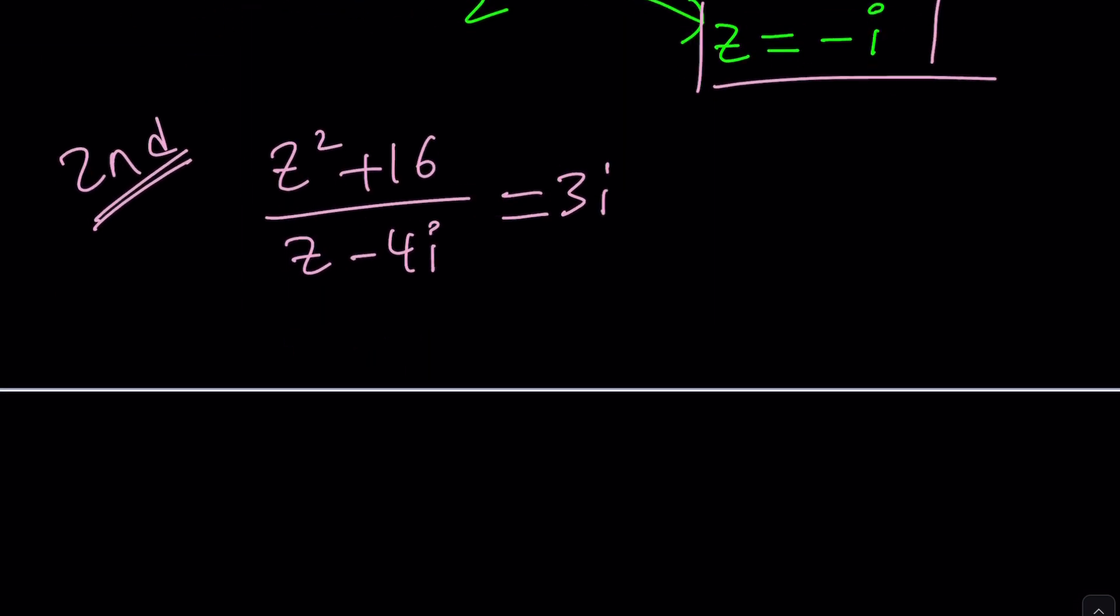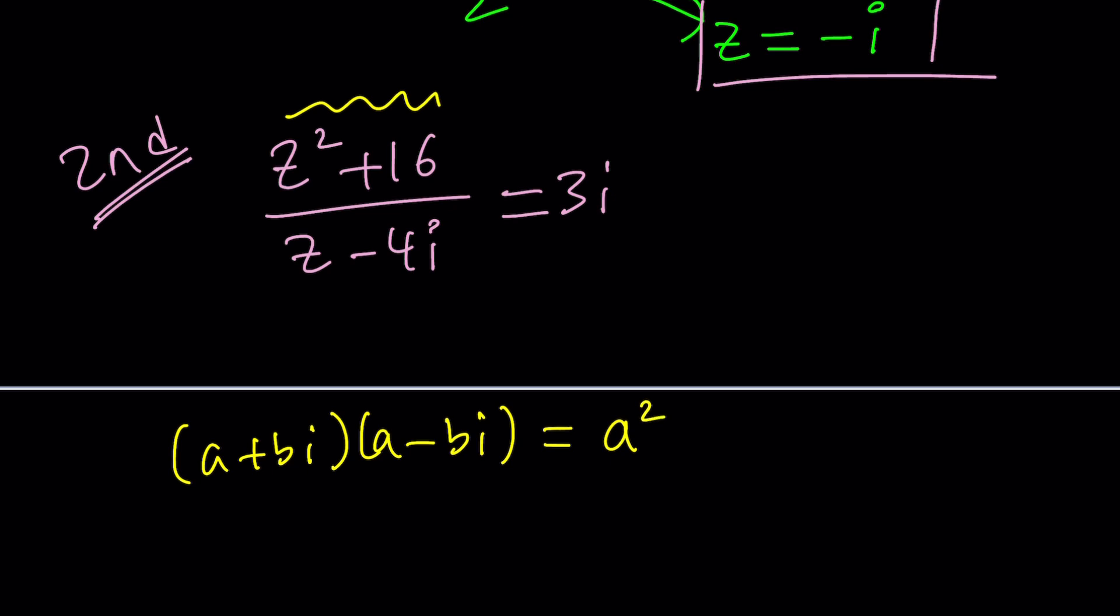Now, what are we going to do? What could be different, right? We could do it differently. Well, if you look at this carefully, you're going to realize, hopefully, that the top is a sum of two squares. So what? Sum of two squares cannot be factored. False. It can be in the complex world. Remember, when you multiply a plus bi and a minus bi, you get a squared minus b squared i squared, but i squared is negative 1. So this gives you a squared plus b squared, right? Exactly. So sum of two squares can be factored. Beautiful.